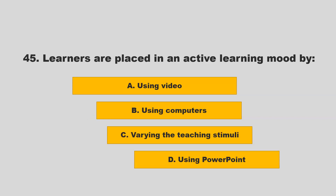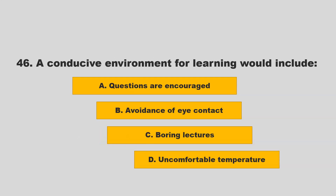Learners are placed in an active learning mood by: A) using video; B) using computers; C) varying the teaching stimuli; D) using PowerPoint. If you chose C — varying the teaching stimuli — you are correct.